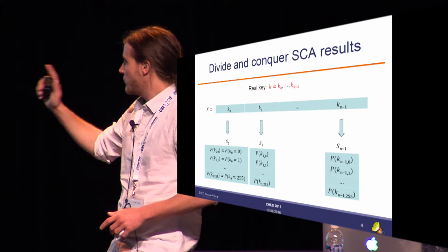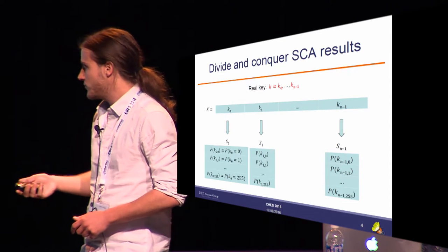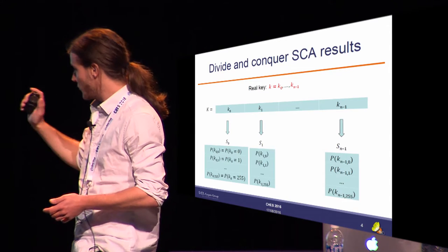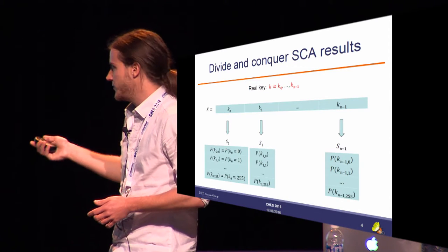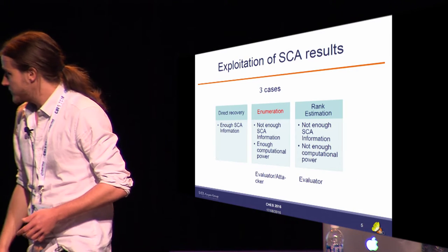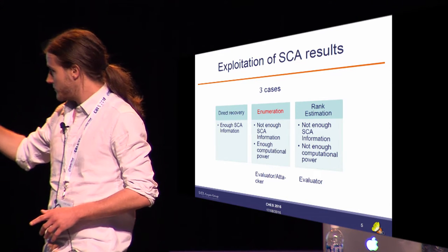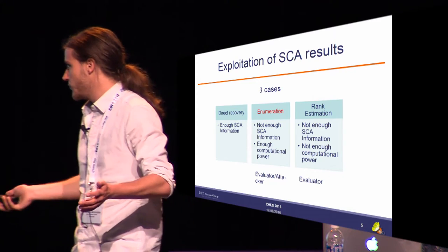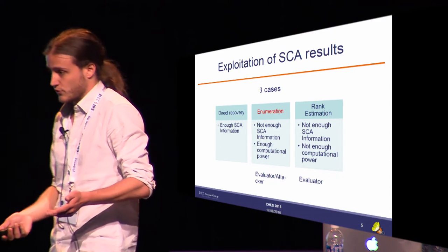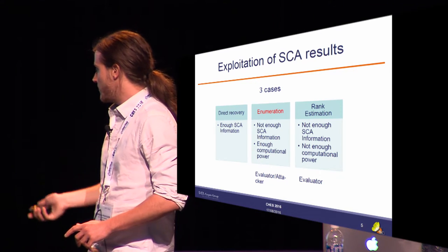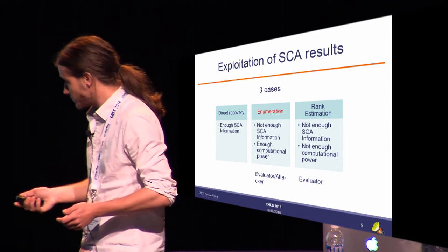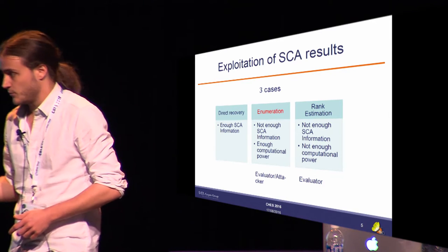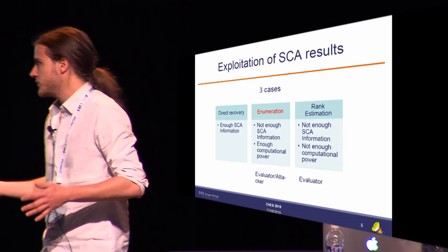Focusing on key zero: I assume an 8-bit sub-key, so I have 256 possible values. After my attack, for all these values I get a probability that each value is the actual one. In the end I have n different lists, each containing 256 different probabilities. In the case where I don't have enough side-channel information — meaning the actual sub-key doesn't rank first in at least one list — but I do have enough computational power to output all keys from most probable to least probable, that's what we call key enumeration. The number of keys output before the actual one is called the rank of the key.